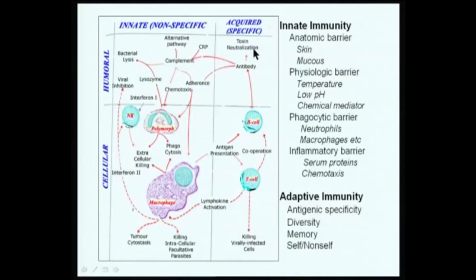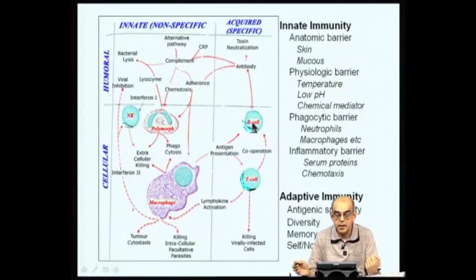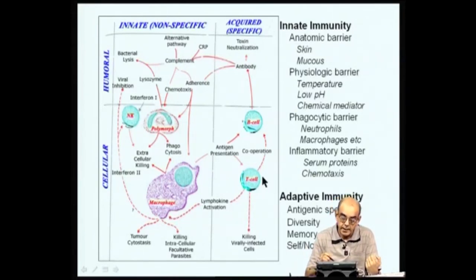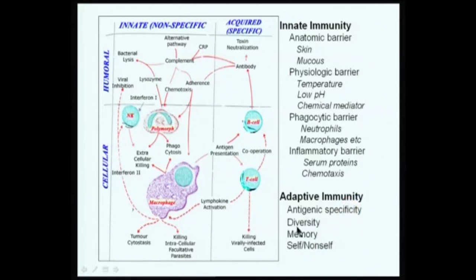Acquired immunity involves not only antibody production by B cells but also interaction between T cells and B cells, because T cells also have the ability to recognize antigen and cooperate with B cells, helping them to proliferate and make antibodies. All these interactions are specific in nature. In addition, you have the phenomenon called antigen presentation, which we will be going into in the coming few slides. There is antigen specificity in adaptive immunity, diversity of specificities involved in antibody generation, an aspect of immunological memory, and of course self and non-self discrimination.